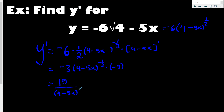The negative exponent becomes positive by moving to the denominator, so it becomes a positive one half exponent, which we write as the square root. The final answer is 15 over the square root of (4 minus 5x).